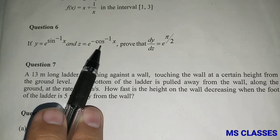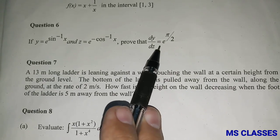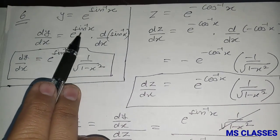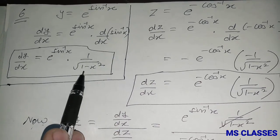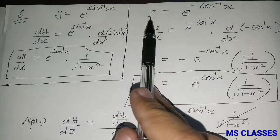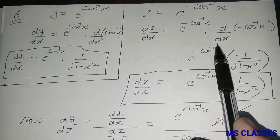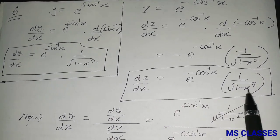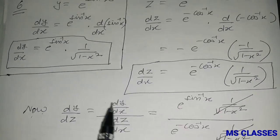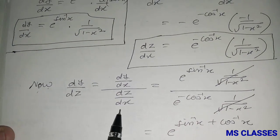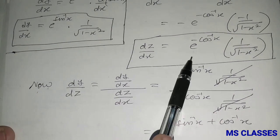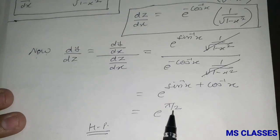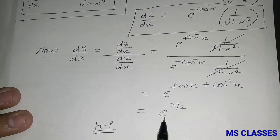Next question: if y = e^(sin⁻¹x) and z = e^(-cos⁻¹x), prove that dy/dz = e^(π/2). As y = e^(sin⁻¹x), dy/dx = e^(sin⁻¹x) · 1/√(1 - x²). Similarly, dz/dx = e^(-cos⁻¹x) · 1/√(1 - x²), since the derivative of -cos⁻¹x is +1/√(1 - x²). Then dy/dz = (dy/dx)/(dz/dx) = e^(sin⁻¹x + cos⁻¹x) = e^(π/2), since sin⁻¹x + cos⁻¹x = π/2.